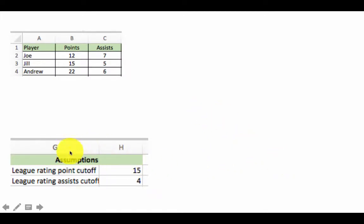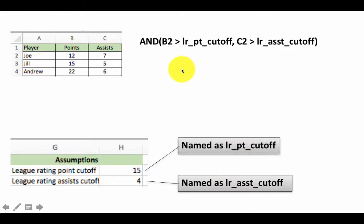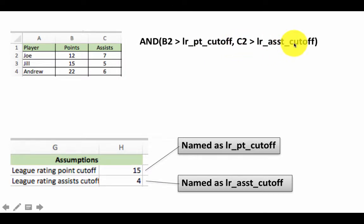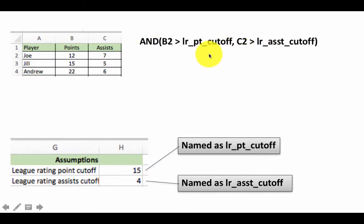We have the assumptions named. First, let's look at the condition all by itself, and then we will incorporate it into an IF function. The condition says the number of points is greater than the point cutoff and the number of assists is at least 4. That translates into B2 greater than LR_point_cutoff, AND C2 greater than LR_assist_cutoff. You construct that using the AND function — it means both of these conditions must be true. If any one is false or both are false, the whole result is false.